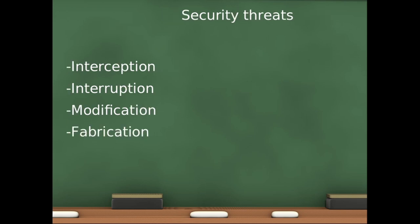In security threats, I'll be talking about four points that generally exist in security. Interception refers to a situation where an unauthorized party has gained access to a service or data. Interruption refers to a situation in which a service or data becomes unavailable — we can mention denial of service and distributed denial of service here. Modification involves unauthorized change of data. Fabrication refers to a situation in which additional data or activity are generated that would normally not exist.